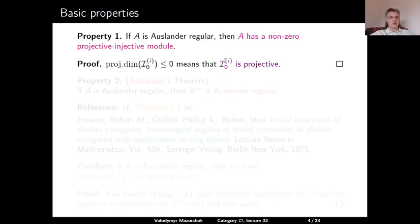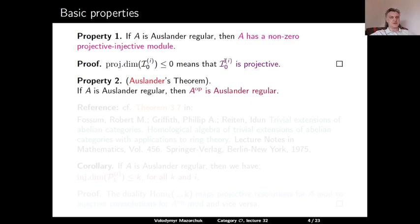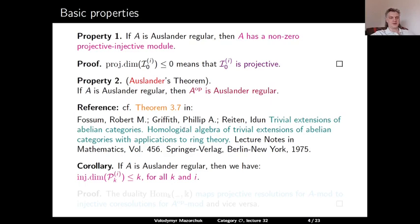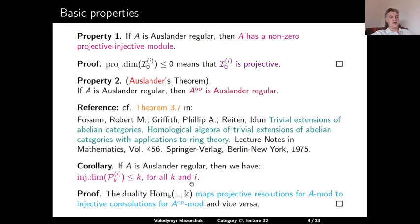Property number 2, known as Auslander's theorem: if A is Auslander-regular, then A-op is Auslander-regular. The reference for this statement is Theorem 3.7 in the book by Fossum, Griffith, and Reiten, Trivial Extensions of Abelian Categories — Homological Algebra of Trivial Extensions of Abelian Categories with Applications to Ring Theory, from 1975. Property 2 has the following corollary: if A is Auslander-regular, then the injective dimension of the (-k)-th homological component of P^i is at most k, for all k and i. The usual vector-space duality maps projective resolutions in A-mod to injective co-resolutions in A-op-mod, and this corollary follows from the left-right symmetry established by Auslander's theorem.